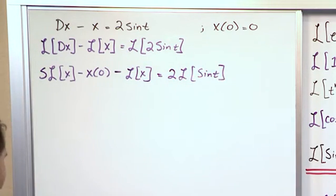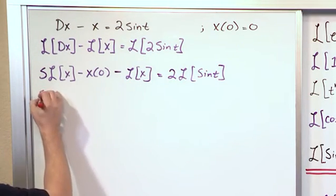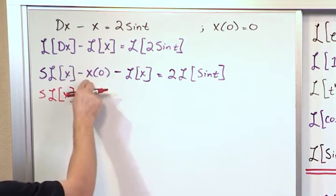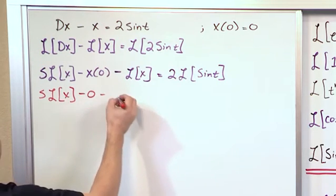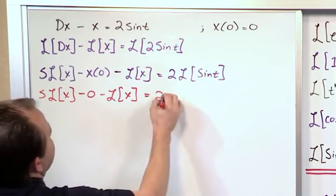All right? So on the left-hand side, what we have, we have s times Laplace transform of x, and then here we have the initial condition, which we can see is zero. So really, I'll just for completeness put it there, but really it just drops away. And now let's go deal with this.